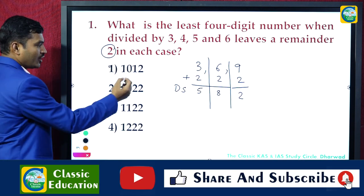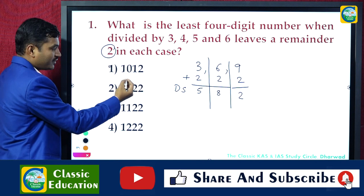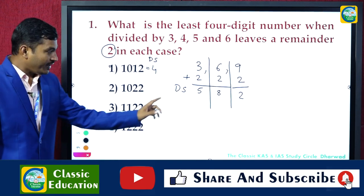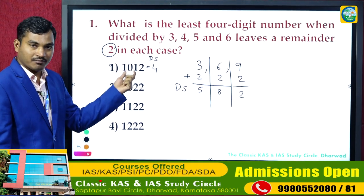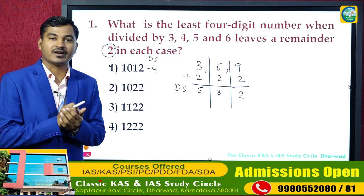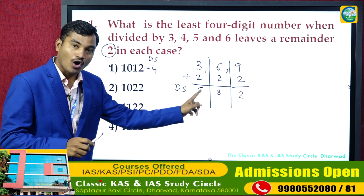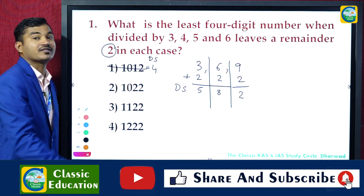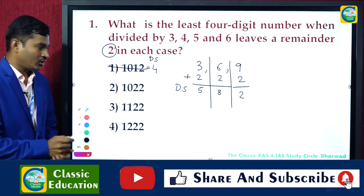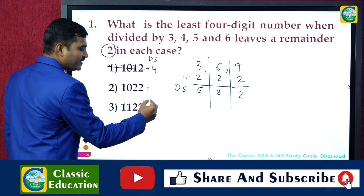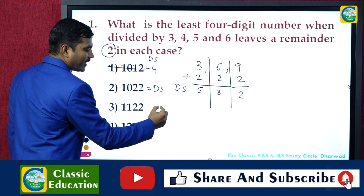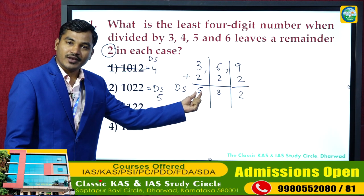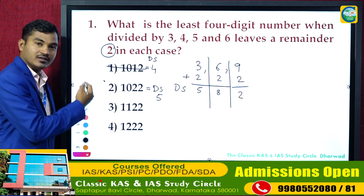Let us check the digit sum of the options. For the first option: 2+1 = 3, 3+1 = 4 — digit sum is 4. But I need digit sum 5, 8, or 2, so this cannot be my answer. For the second option: 2+2+1 — digit sum is 5. So this can be my answer.